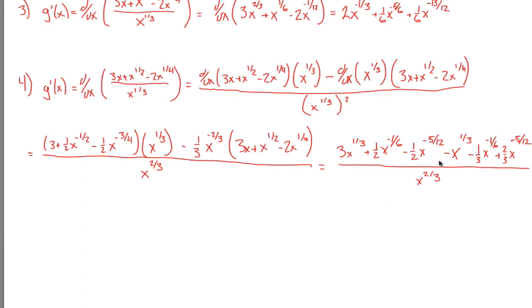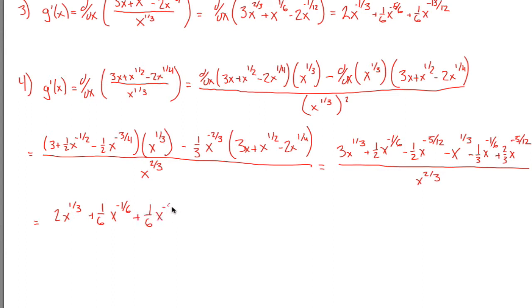Distributing that in: negative 1/3 times negative 2/3 times 3x gives negative x to the 1/3. Negative 1/3 x to the negative 2/3 times x to the 1/2 gives negative 1/3 x to the negative 1/6. And negative 1/3 times negative 2 gives positive 2/3, with exponent negative 2/3 plus 1/4 equaling negative 5/12. Now combining like terms: 3 x to the 1/3 minus 1 x to the 1/3 is 2 x to the 1/3; 1/2 minus 1/3 x to the negative 1/6 is 1/6 x to the negative 1/6; and negative 1/2 plus 2/3 x to the negative 5/12 is positive 1/6 x to the negative 5/12.